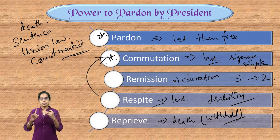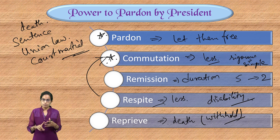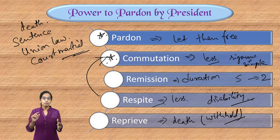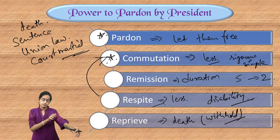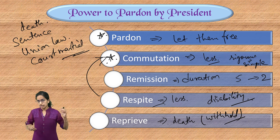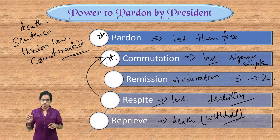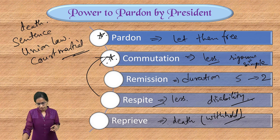In this section, we have talked about the process of election, qualifications, powers, pardon and veto powers, and the ordinance-making power of the president, which falls under Article 123.